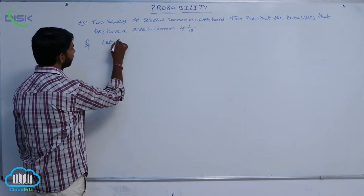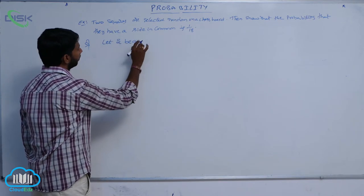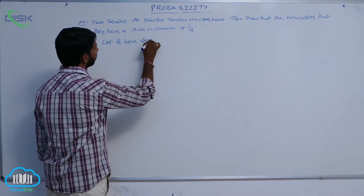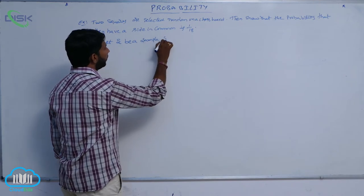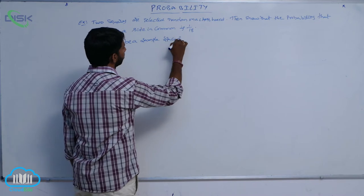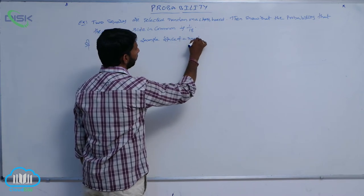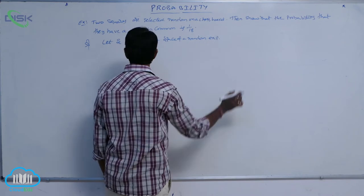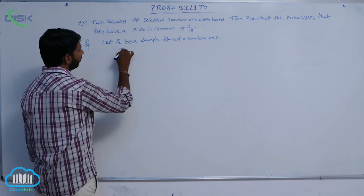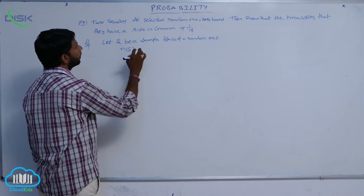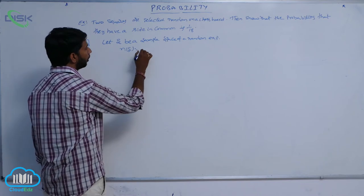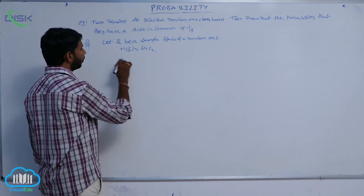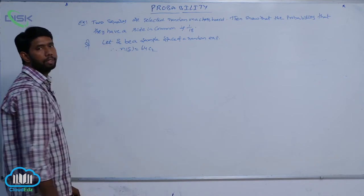Let S be the sample space of this random experiment. N of S is equal to, if two squares are selected from 64, this is 64 C 2. That is N of S.